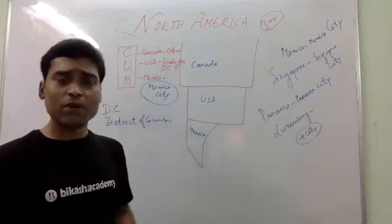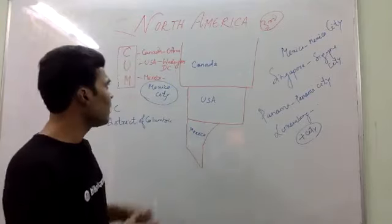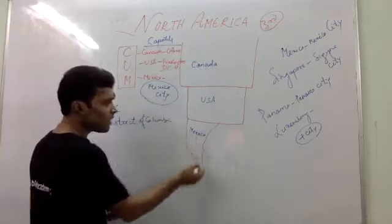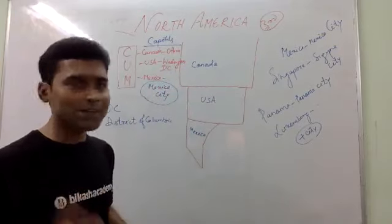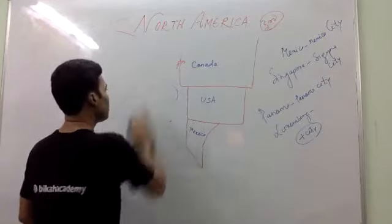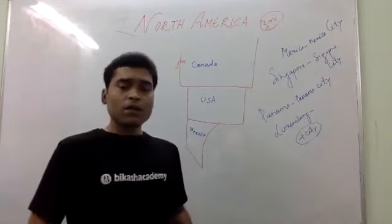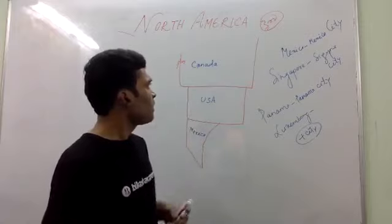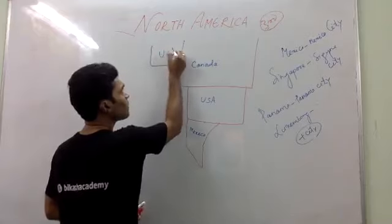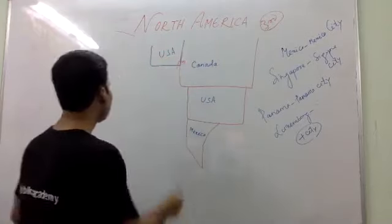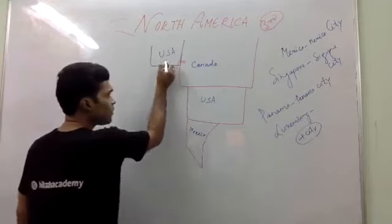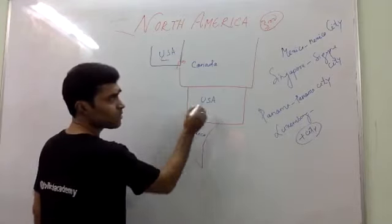We are talking about the geography of North America. There are only three big countries in North America. We will learn the political features first, then the physical features. You will also notice there is a separate part — this is also USA — we will talk about it step by step.